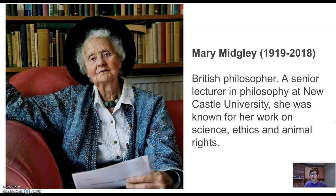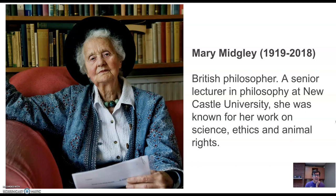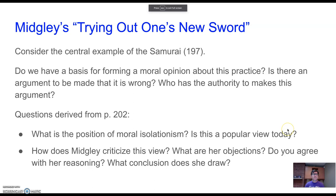We talked last time about the problem of contradiction. Midgley really focuses, among other things, on the claim that ethical relativism eliminates the basis for moral disagreement and leads to a kind of problem of contradiction or incoherence. It also doesn't leave any room for questioning one's own basic commitments or the guiding ideals or code of one's society. Many of these problems are ones that Midgley brings up. She's a philosopher at Newcastle in England, recently deceased, known for her work on science, ethics, and animal rights. Her essay 'Trying Out One's New Sword' is what we read.